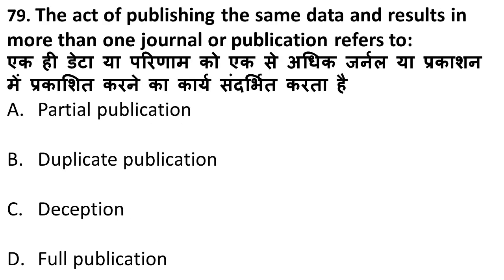Next question: the act of publishing the same data and results in more than one journal or publication refers to what? If you have one result and publish it in one journal and then publish the same result and data in another journal to get two publications — this is not ethical. It is called duplicate publication. Remember: publishing one result in two publications is duplicate publication.